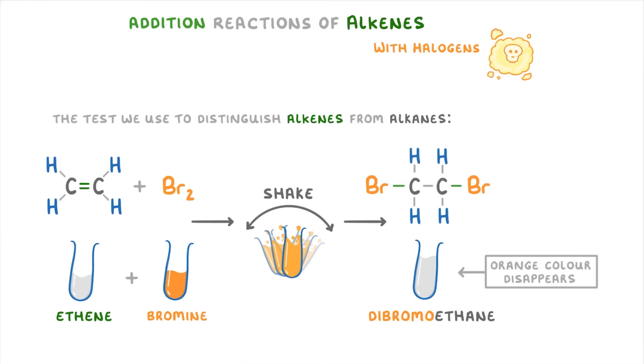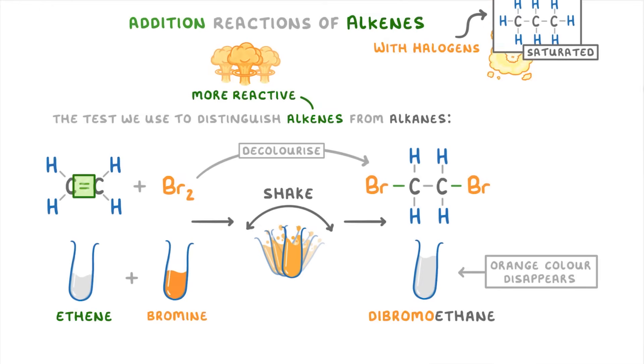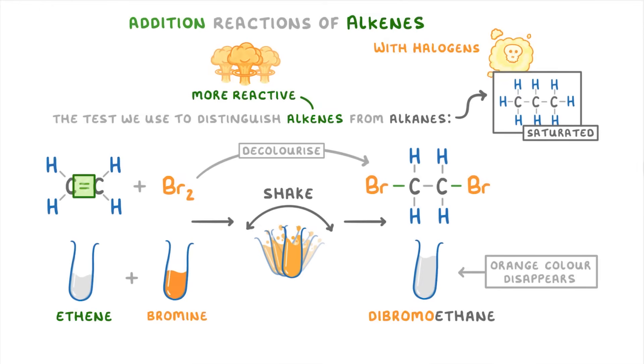This is actually the main test that we use to distinguish alkenes from alkanes. Because alkenes have double bonds, they're more reactive and can react with the bromine to decolorize it. In contrast, alkanes are saturated so they don't have any double bonds for the bromine to be added to.